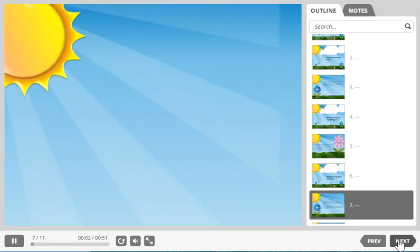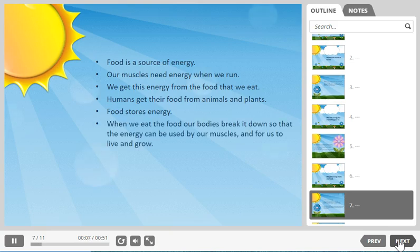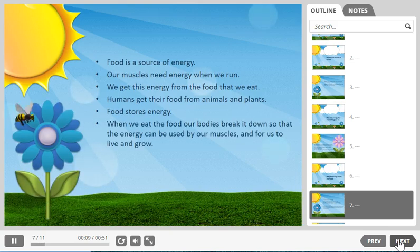Food is a source of energy. Remember we said a source is where it comes from. So we get our energy from food. Our muscles need energy when we run. We get this energy from the food that we eat. Humans get their food from animals and plants. So that's when we eat meat and chicken and vegetables. So the animals and plants that we get our energy from.